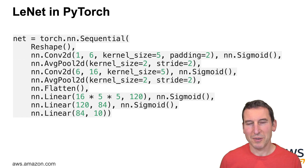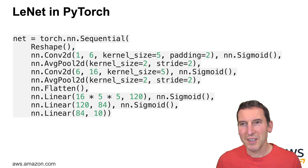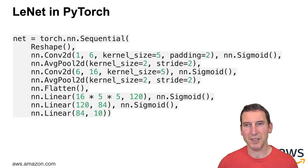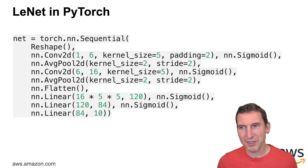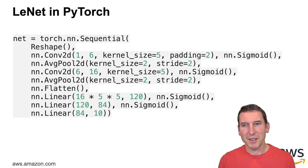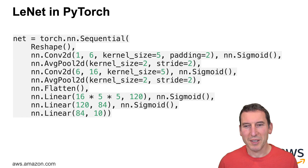If you want to do this in PyTorch, after suitably reshaping the data into a 2D object, you have a 2D convolution, average pooling, another 2D convolution, another average pooling — using the original sigmoid activations. You'd probably want to replace average pooling with max pooling. Then you flatten it again, apply a linear neural network layer, another linear one, and then you get some outputs. This was the state of the art for a long time.